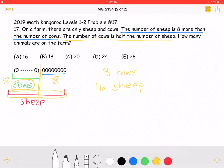If we add those two numbers together, we will see that there are a total of 24 animals on the farm, which is answer choice D.